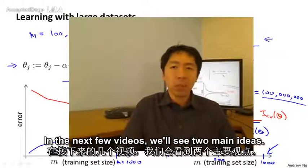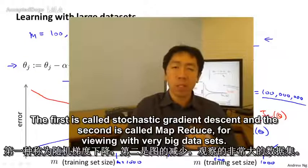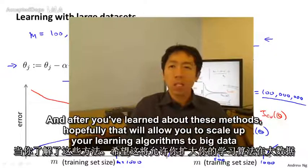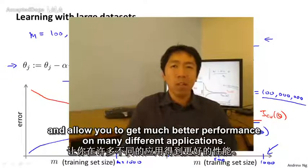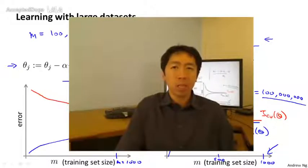In the next few videos, we'll see two main ideas. The first is called stochastic gradient descent and the second is called MapReduce, for dealing with very big data sets. And after you've learned about these methods, hopefully that will allow you to scale up your learning algorithms to big data and allow you to get much better performance on many different applications.